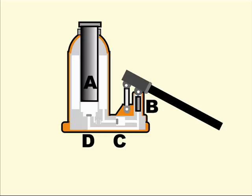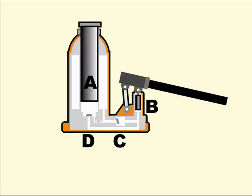First we place the jack in the proper place to lift whatever object we want to raise off the ground. The big piston labeled A is in its extreme lower position and its cylinder is almost empty.